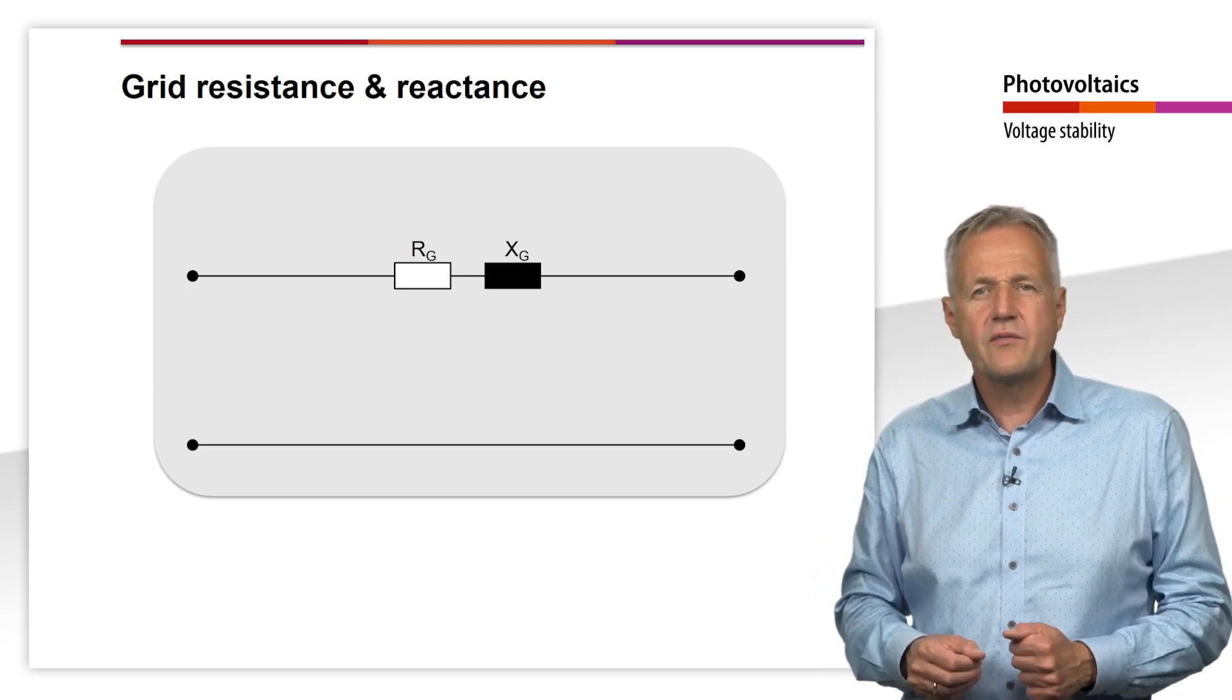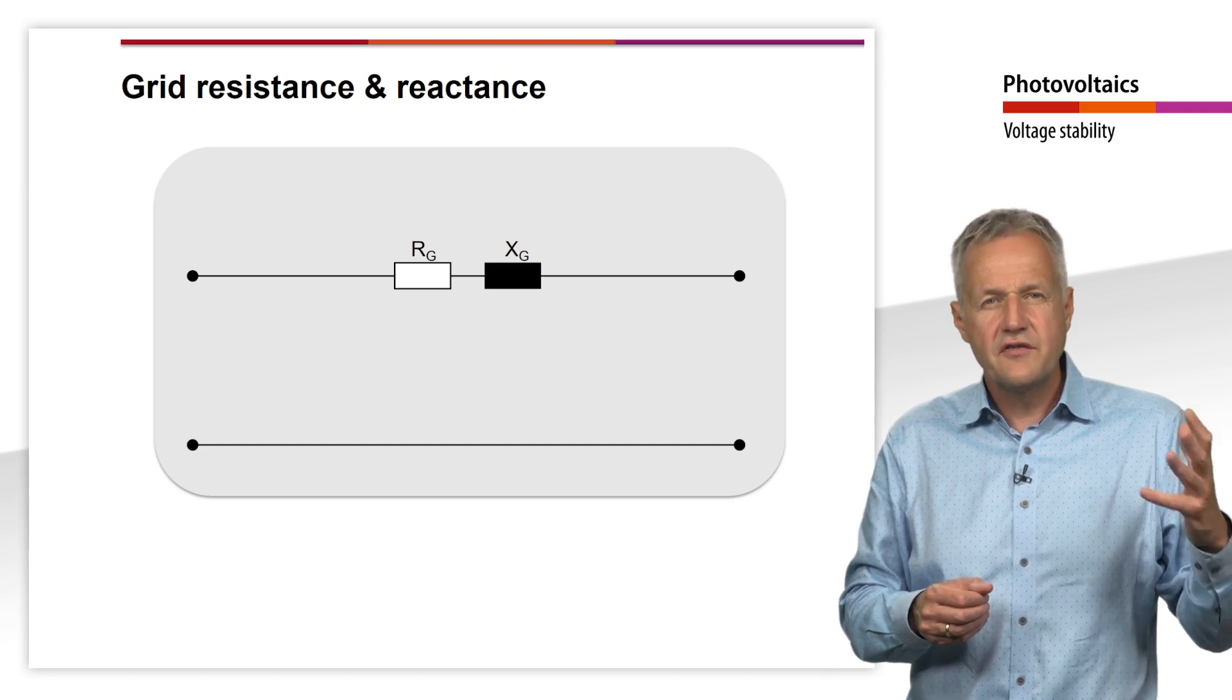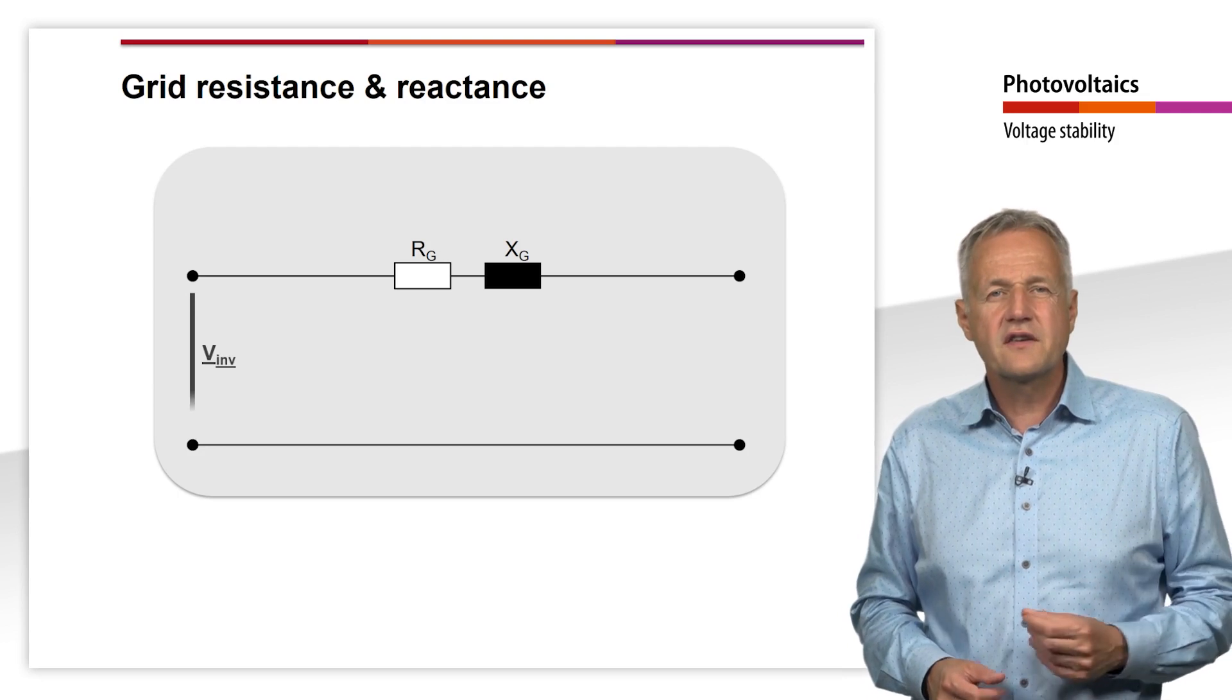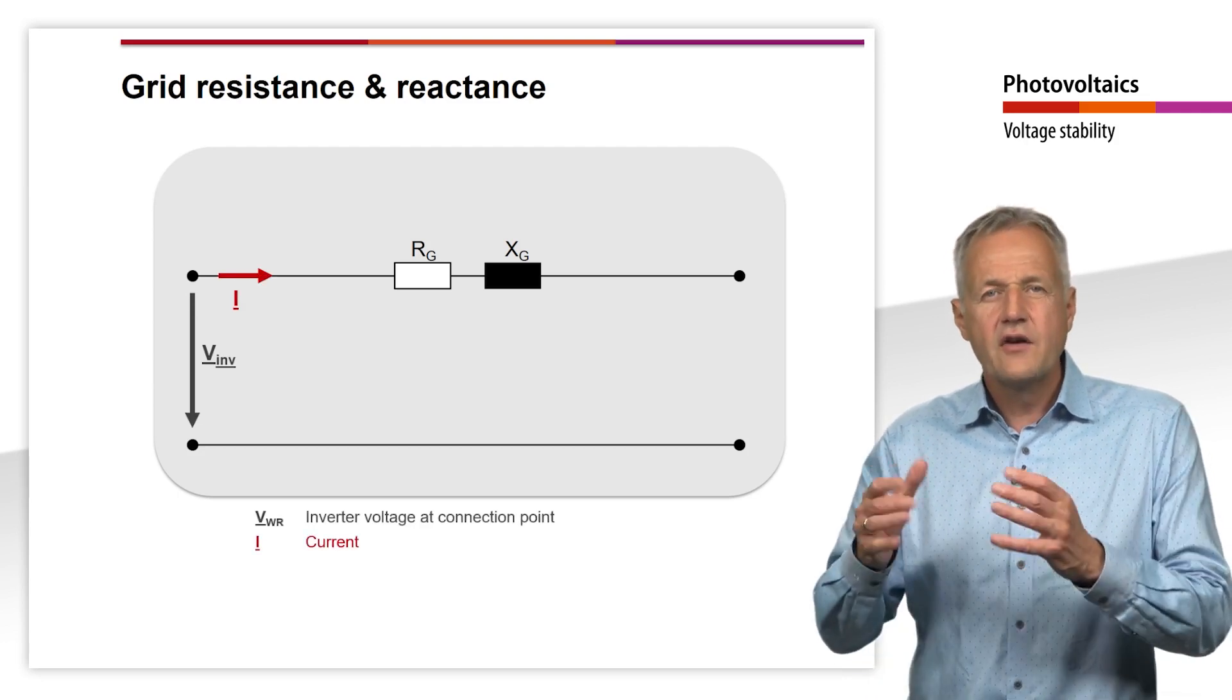At the beginning of the line, we feed in a voltage V with our inverter so that the current I flows.